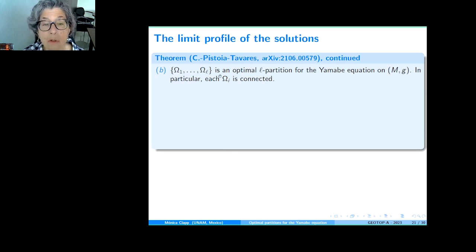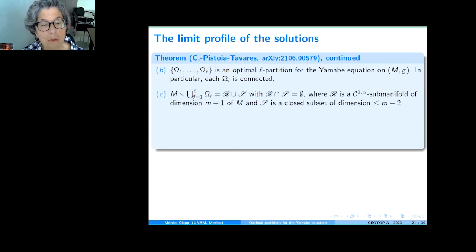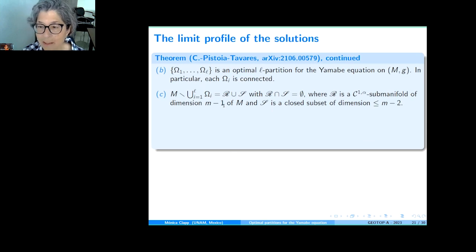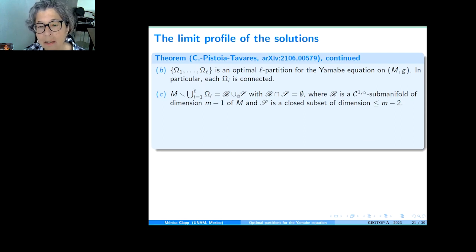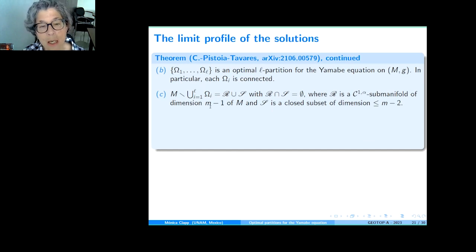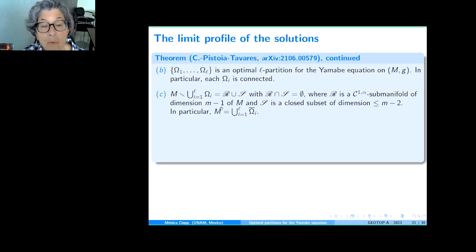What happens with the complement? Taking M minus the union of the open sets, this looks like an (M-1)-dimensional CW complex in the language of topology — the union of a regular part and a singular part. The regular part is a C^{1,α} submanifold of dimension M-1 of M, and the singular part has Hausdorff dimension ≤ M-2. In particular, M is the union of the closures of the Ω_i's — this is really a partition.